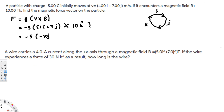Then we have 7j crossed with k. j cross k is going to be positive i. So the j component contributes positive 70i.